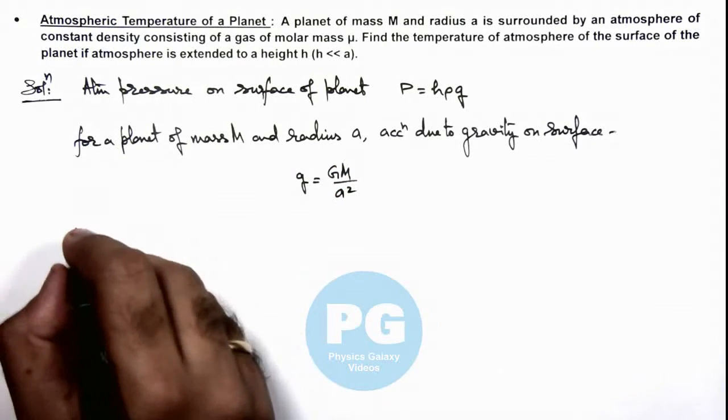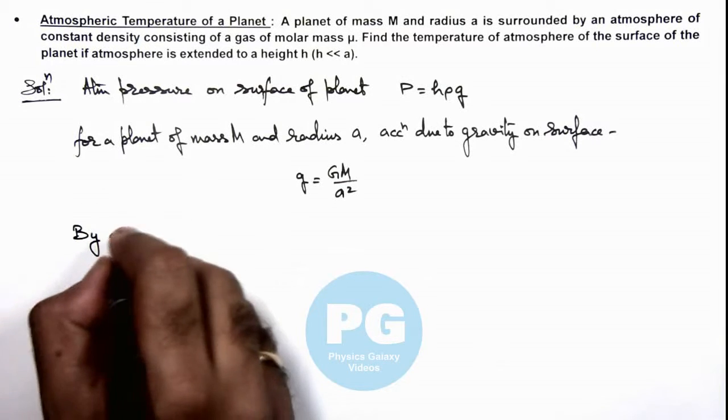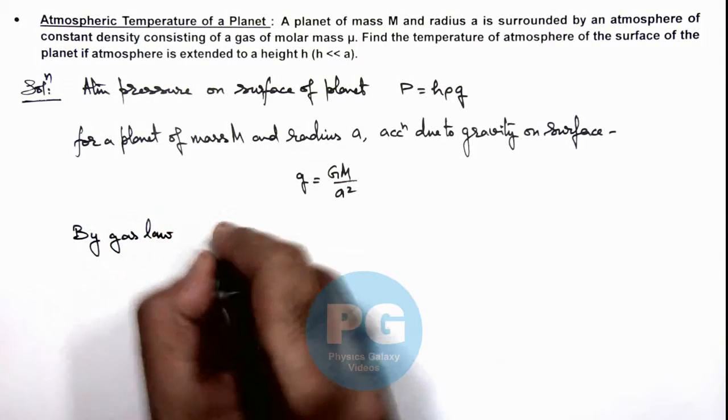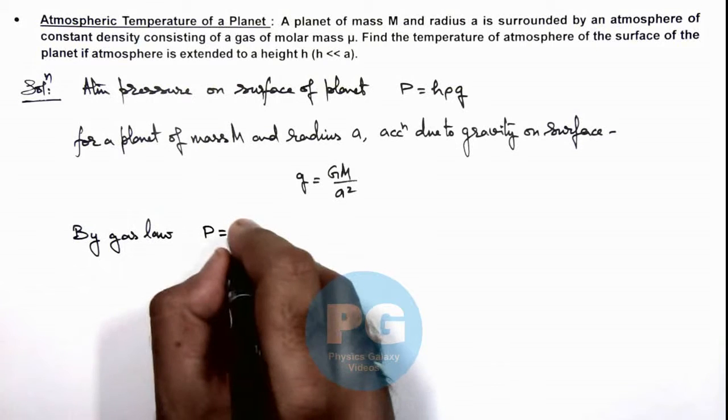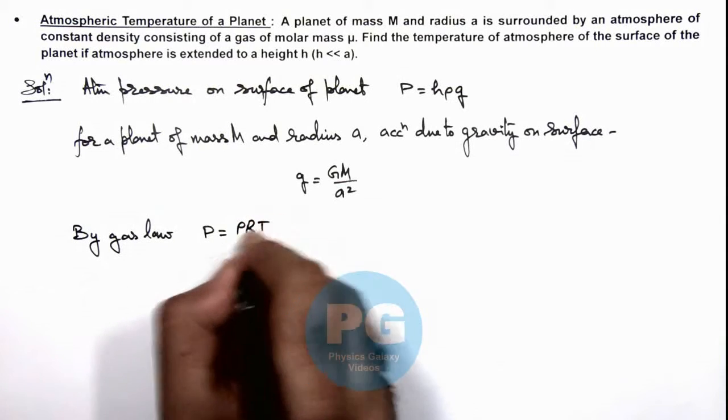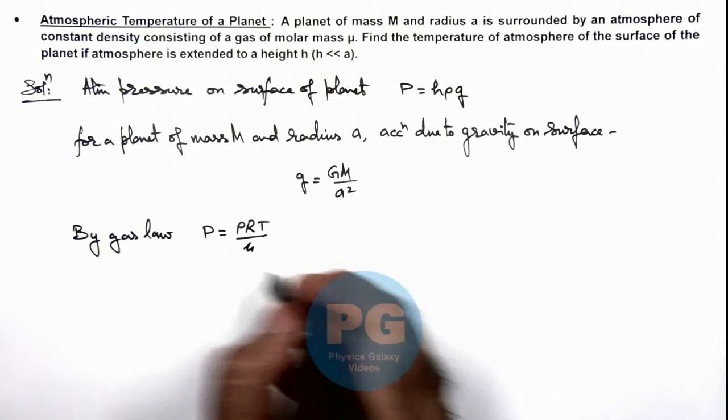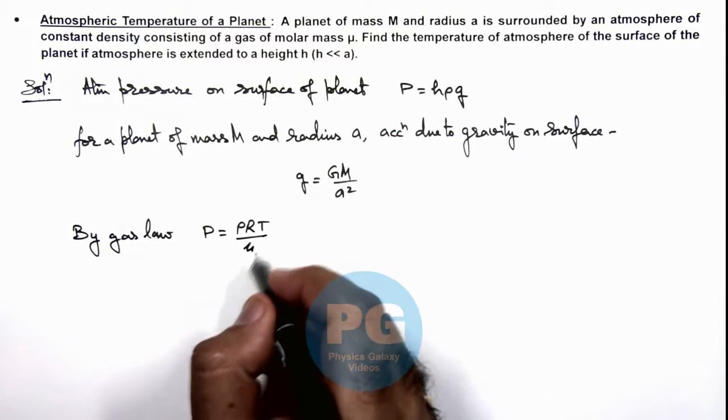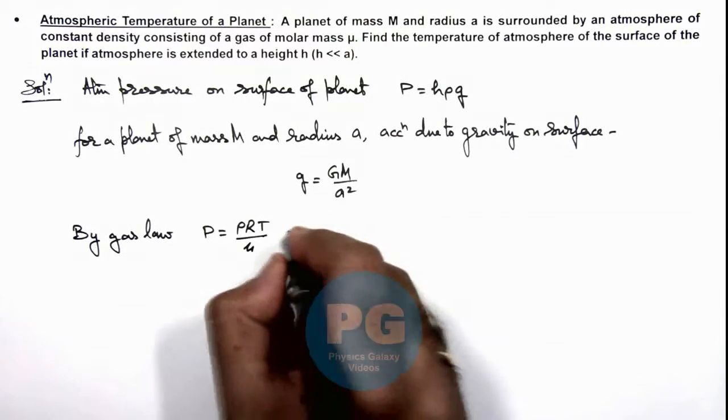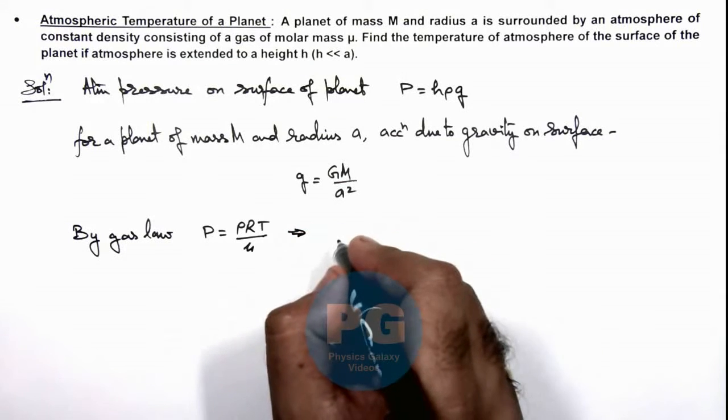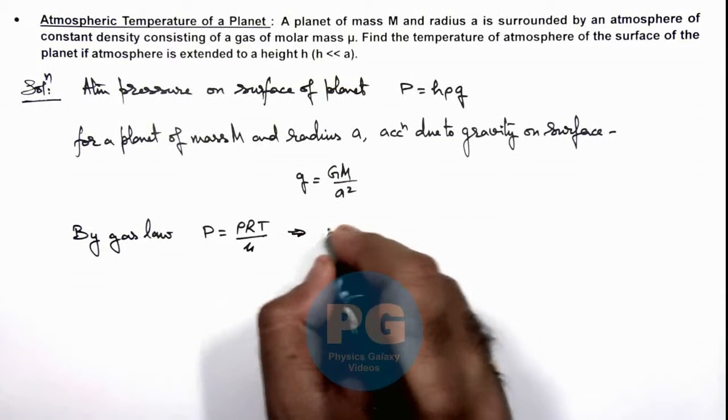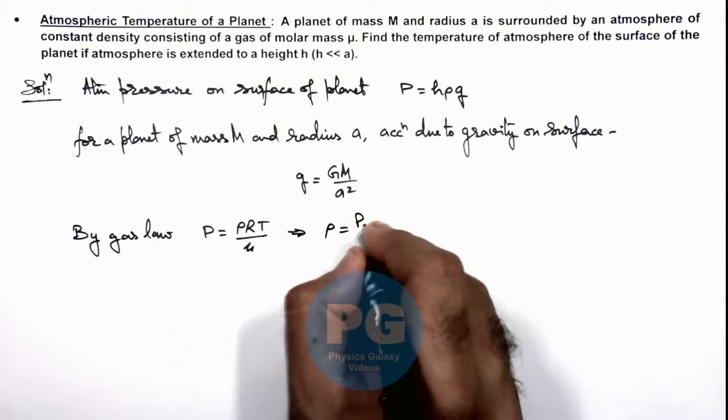And we also have by gas law, the pressure is equal to ρRT/μ, as we are given with the molar mass of atmospheric gas to be μ. Then it gives us the value of atmospheric density to be equal to Pμ/RT.